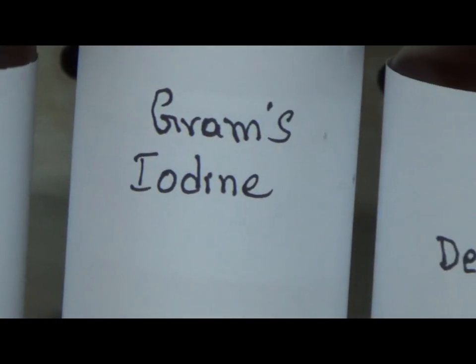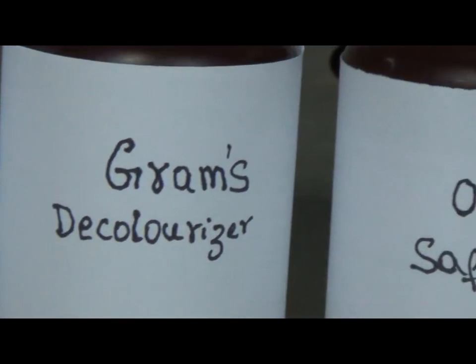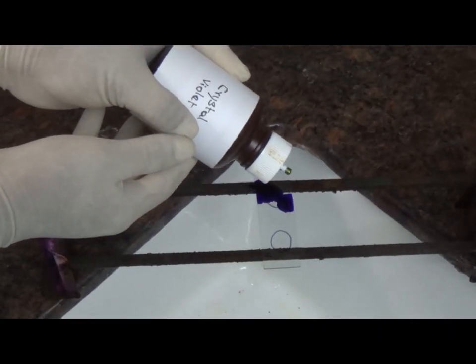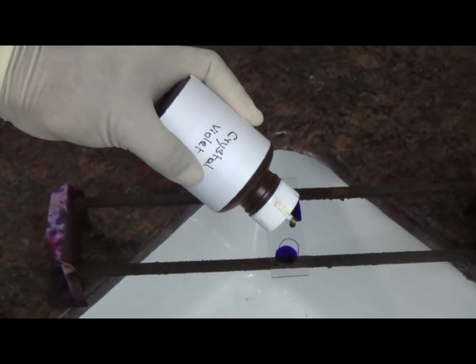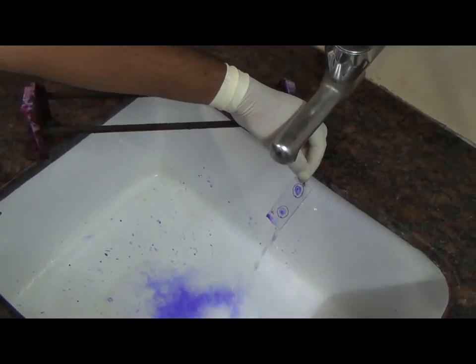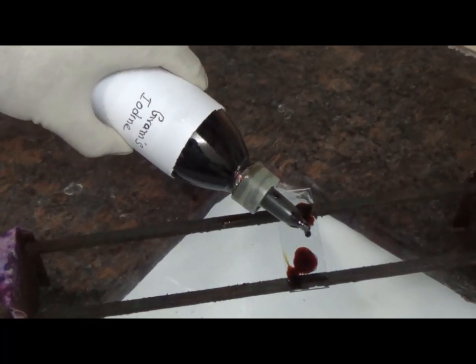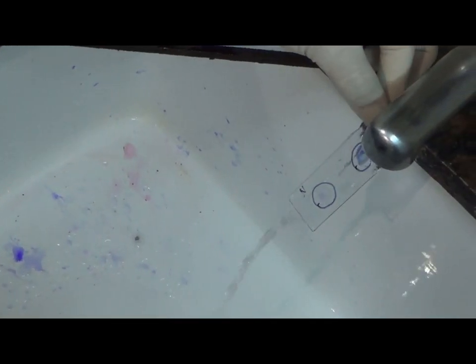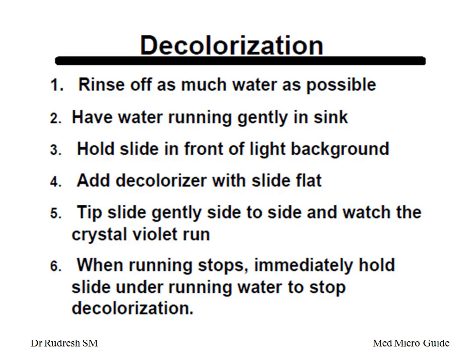The first step is primary staining — we use crystal violet, then mordant, Gram's iodine, decolorizer, and the counter stain safranin. For primary staining, we add crystal violet on the smear. Then add Gram's iodine and wait for one minute. Wash with tap water. Add two to three drops of decolorizer — here I am using acetone. Acetone is the fastest decolorizer, hence you should wash it very fast. We have to stop decolorization when crystal violet stops running out of the smear.